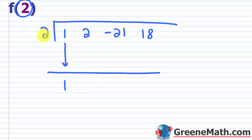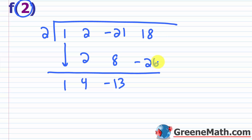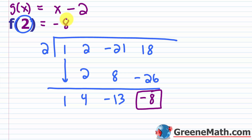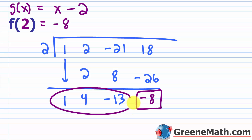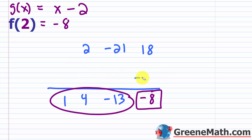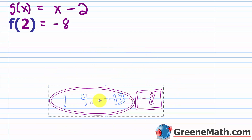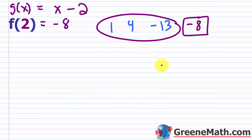2 times 1 is 2. 2 plus 2 is 4. 2 times 4 is 8. Negative 21 plus 8 is negative 13. 2 times negative 13 is negative 26. 18 plus negative 26 is negative 8. So this is your remainder, and that tells me that f of 2 is negative 8. These other numbers form your quotient.